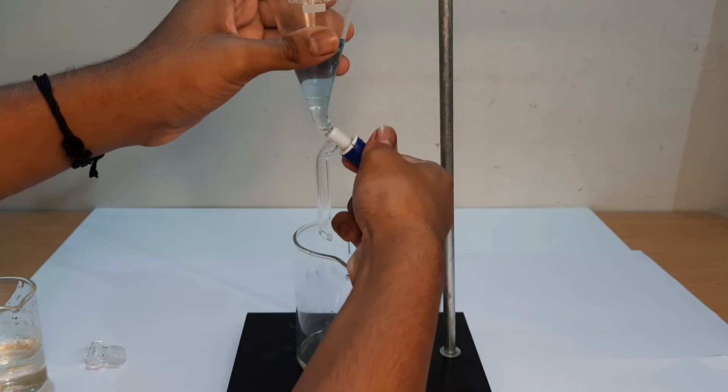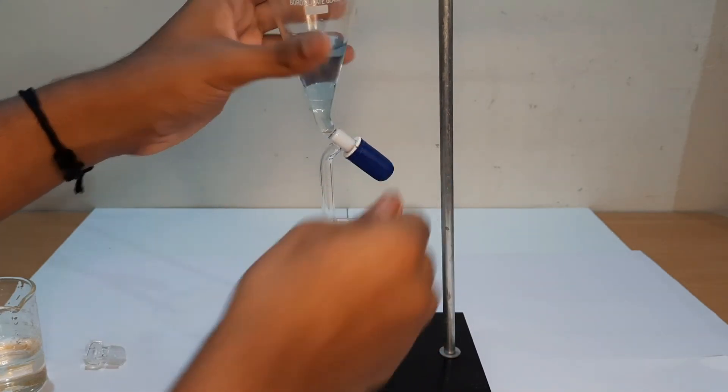Thus the separation of two immiscible liquids by a separating funnel depends on the difference in the densities.